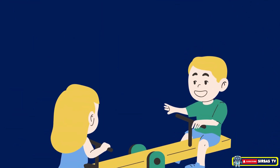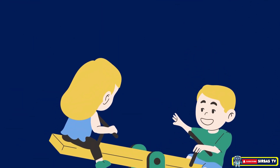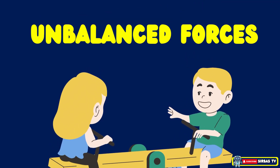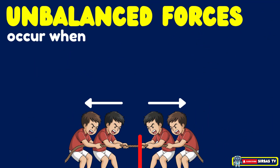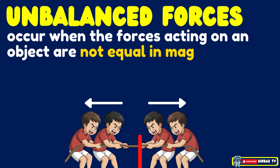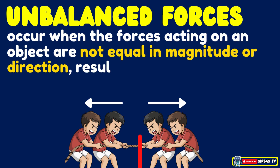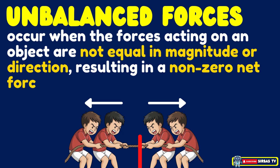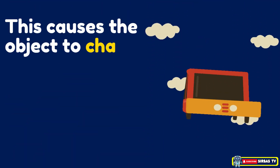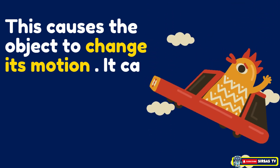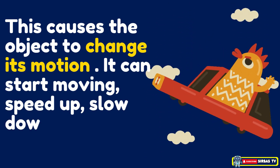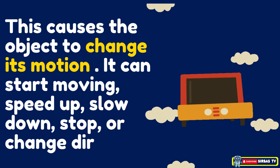Now, what happens when the forces are not equal? That's when we get unbalanced forces. Unbalanced forces occur when the forces acting on an object are not equal in magnitude or direction, resulting in a non-zero net force. This causes the object to change its motion — it can start moving, speed up, slow down, stop, or change direction.